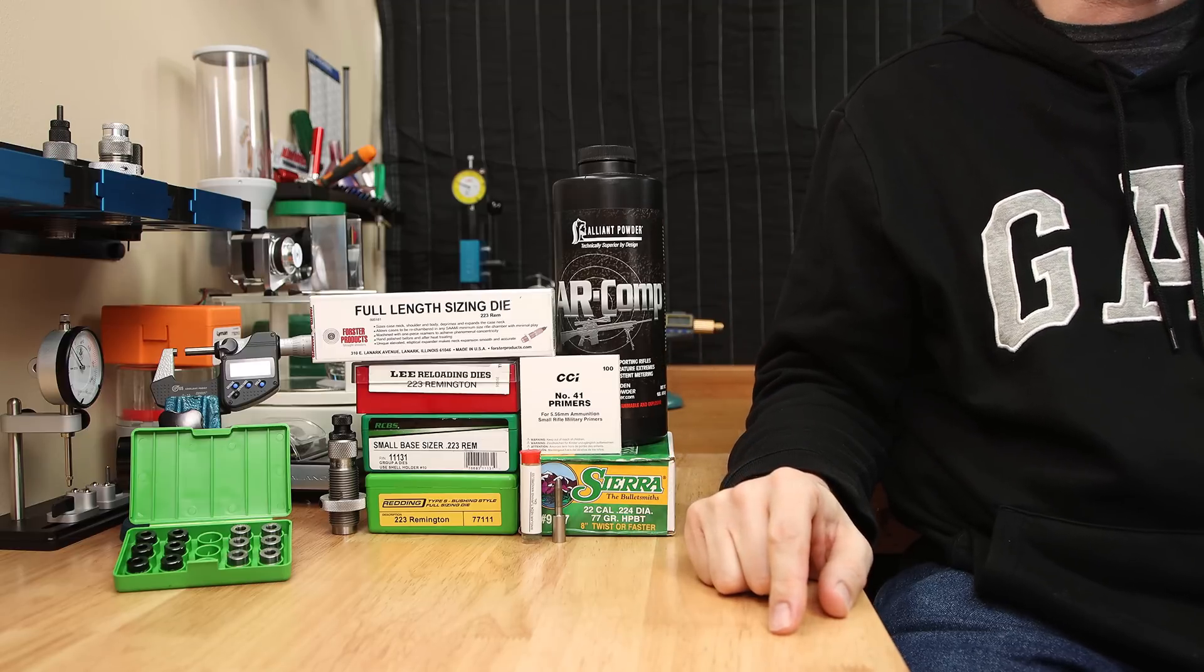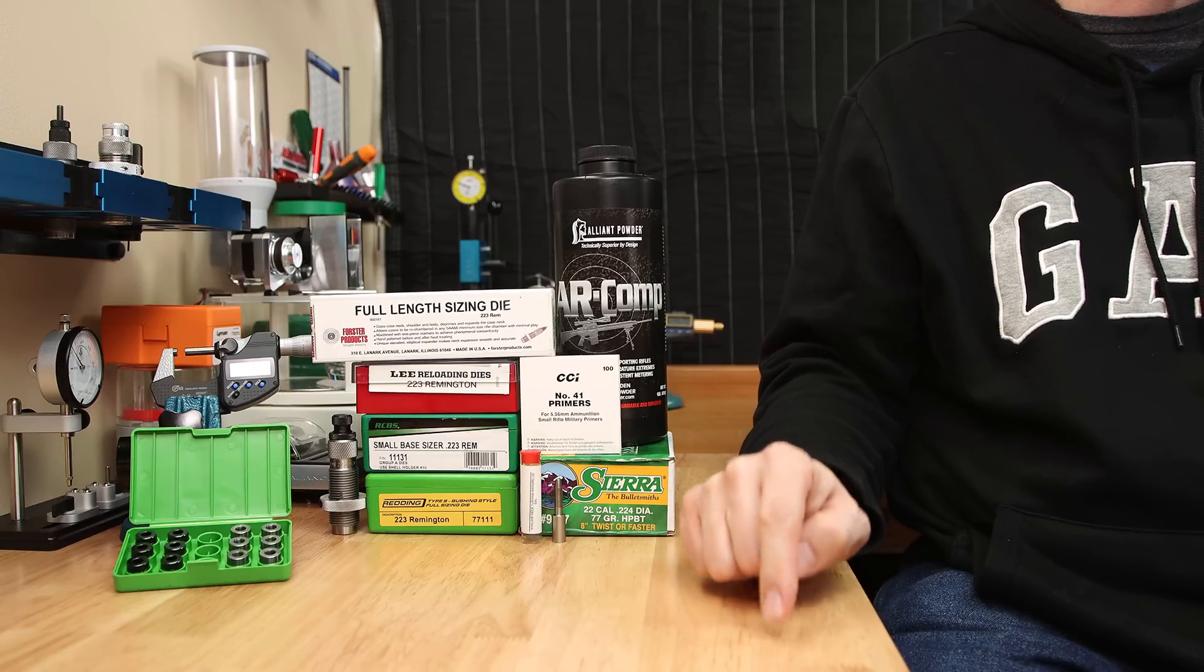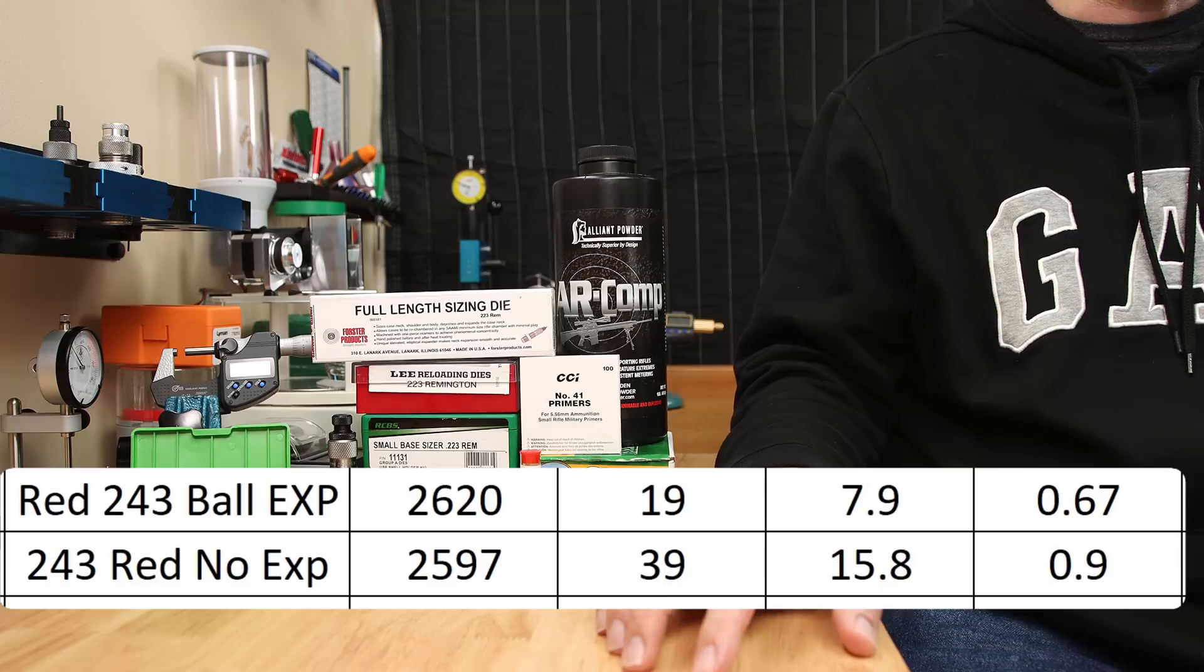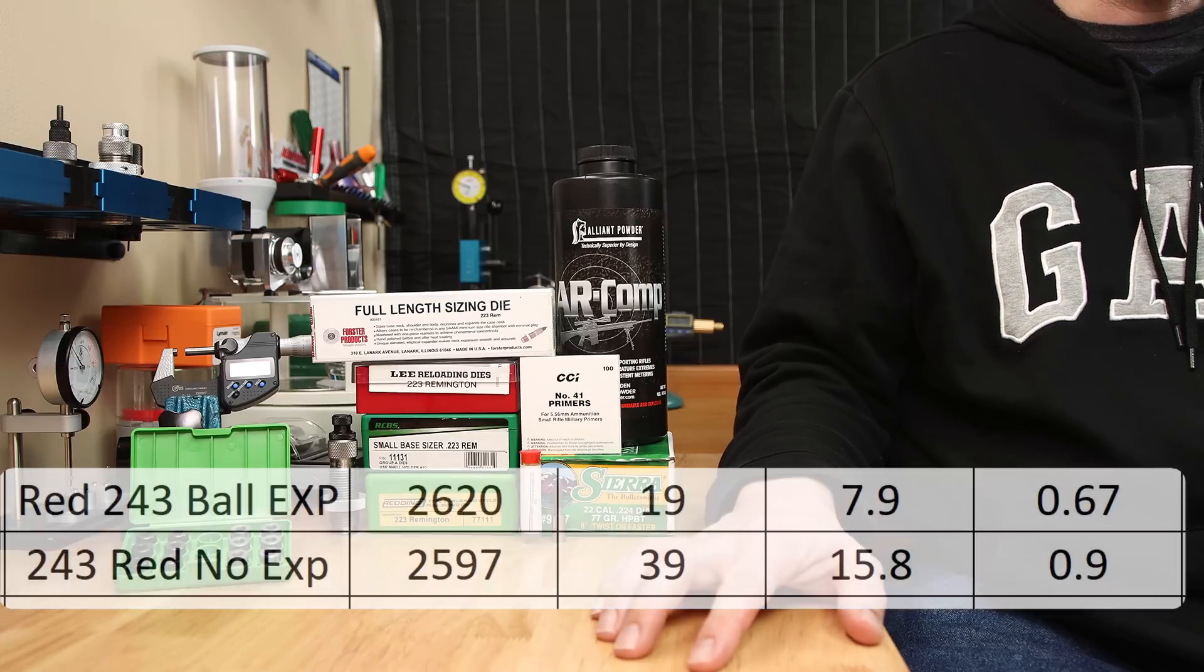The other configuration that I thought was interesting is when we used our Redding S die with the .243 bushing, but used its stock expander not only to shrink the groups, but it also lowered the standard deviations and extreme spread. Clearly, the bushing by itself did nothing to help this combination.